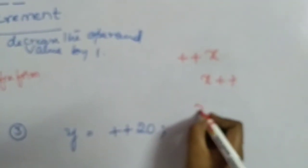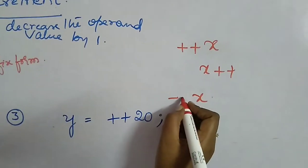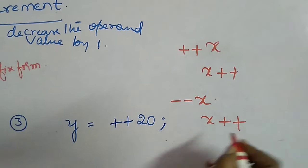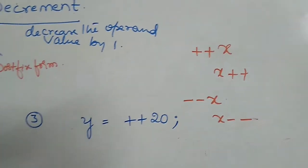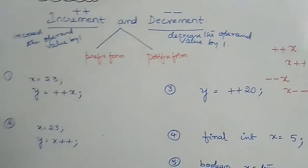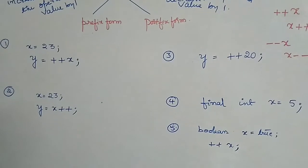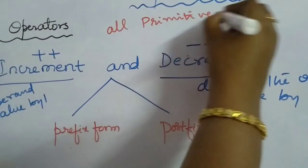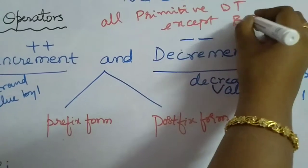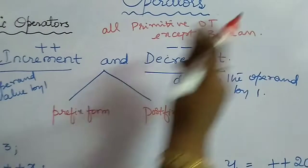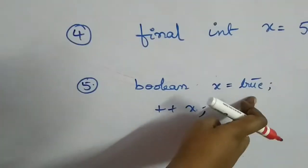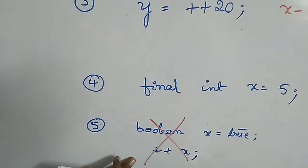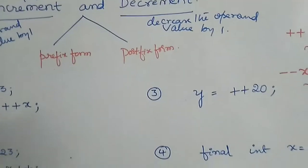In the same way, with the decrement operator, putting it before the operand is pre-decrement and putting it afterwards is post-decrement. Increment and decrement operations can be performed on all primitive data types except boolean. For example, boolean x is equal to true and then ++x is not possible — you will get a compile-time error. So this can be applied on every primitive data type except boolean.